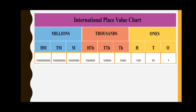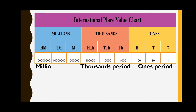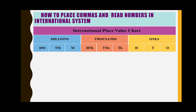Now let us look at the international place value chart. The difference between the Indian and international systems is: in the Indian system, after thousands we have lakhs, ten lakhs, crores, and ten crores. In the international system, after thousands we have ten thousands, hundred thousands, then millions, ten millions, and hundred millions. Millions, ten millions, and hundred millions come under the millions period.